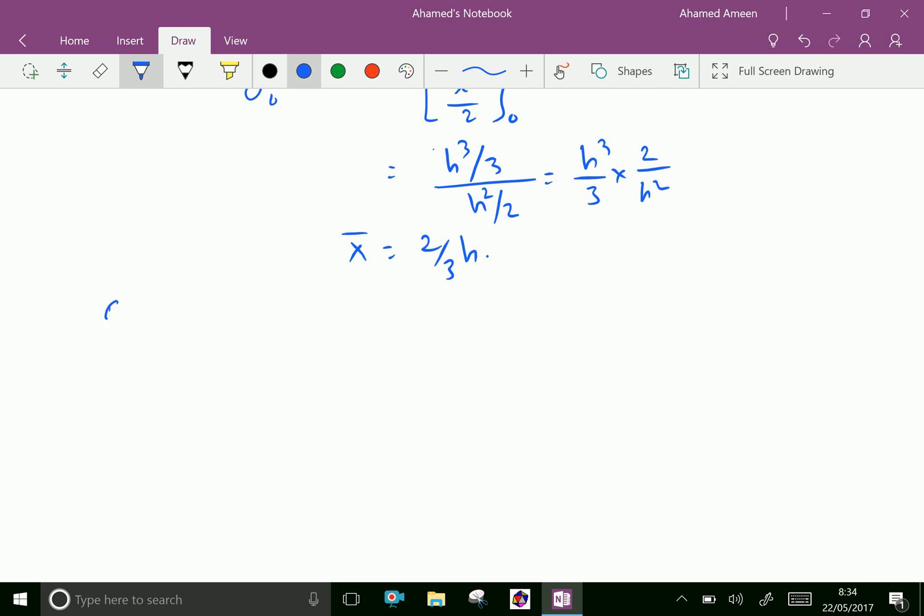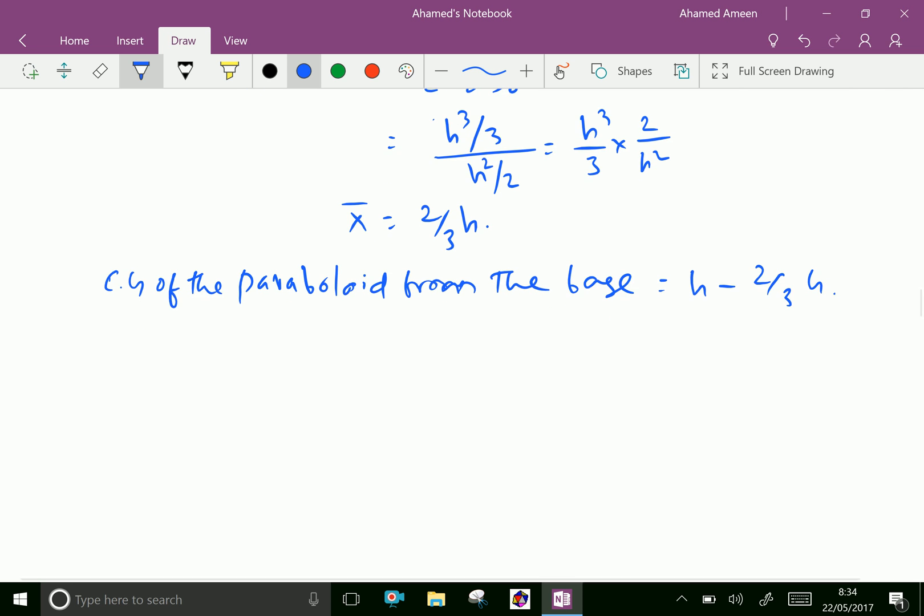The CG of the paraboloid from the base equals h minus 2h/3, which equals h/3, since the perpendicular height is h.